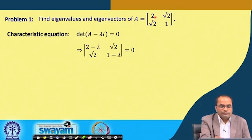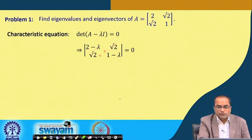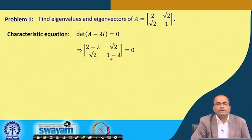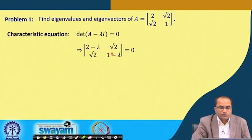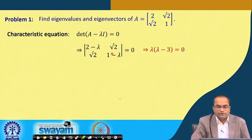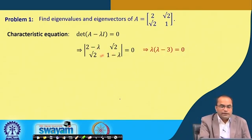Here λ will be subtracted from the diagonal entries; otherwise this is just the matrix A. So we have (2−λ) and √2, and again √2 and (1−λ) equal to 0. Now we can simplify this easily — we multiply (2−λ) by (1−λ) and then subtract the off-diagonal product, which is √2·√2 = 2.